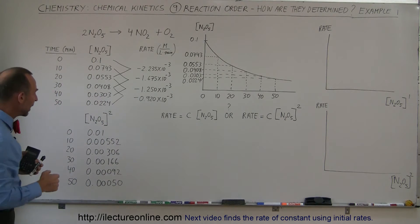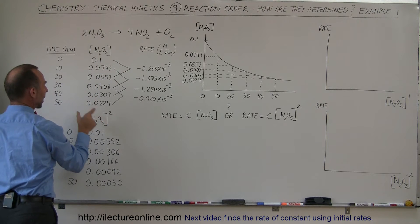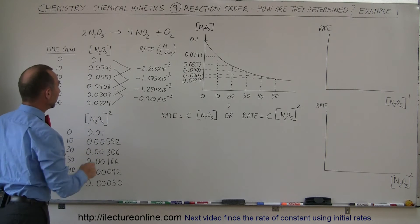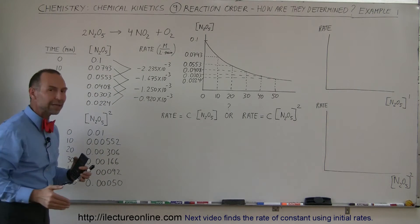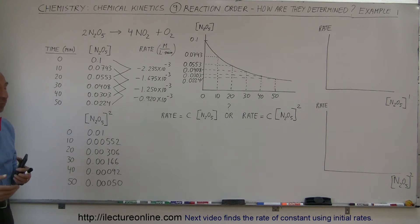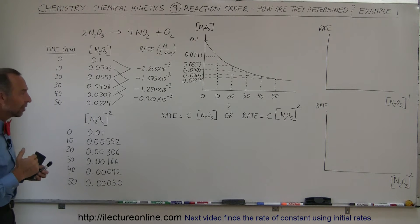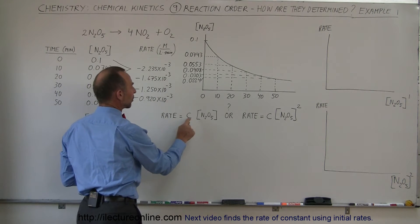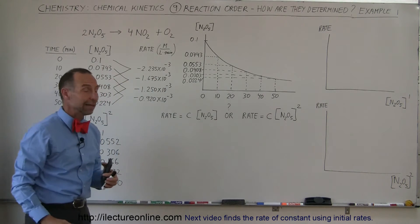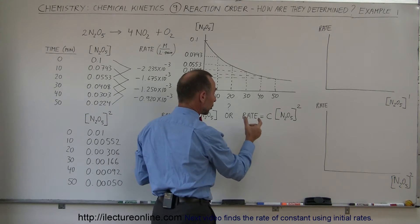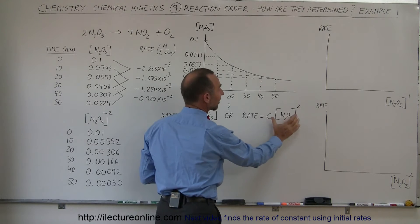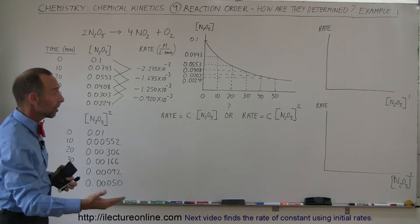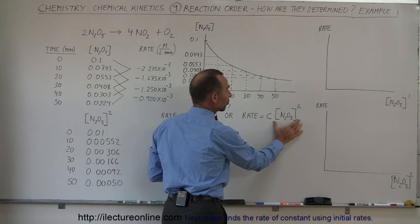We also take the concentration of the reactant and square it. So at time zero, 0.1 squared equals 0.01. We square the concentration at each 10-minute interval. If the reaction is first order, the rate should equal some constant times the concentration to the first power. If it's second order, the rate equals a constant times the concentration squared. It could even be third order.